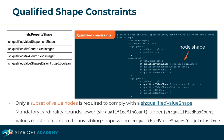In contrast, with qualified shape constraints, only a subset of value nodes is required to comply with the shape linked via the 'qualifiedValueShape' predicate. The properties 'qualifiedMinCount' and 'qualifiedMaxCount' specify the lower and upper boundaries of how many value nodes must comply with the shape. The value node must not conform to any sibling shape when 'qualifiedValueShapesDisjoint' is true — in other words, node sets validated and counted by each qualified shape must be disjoint.